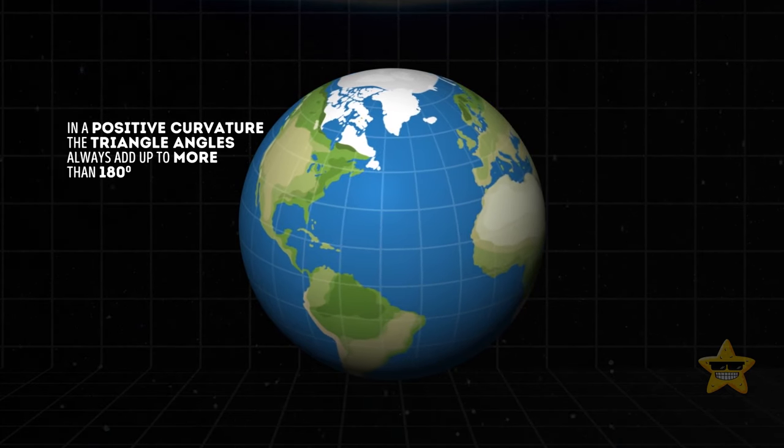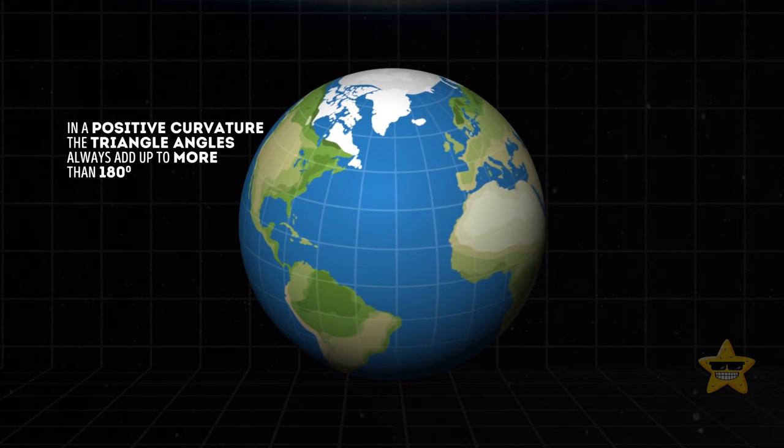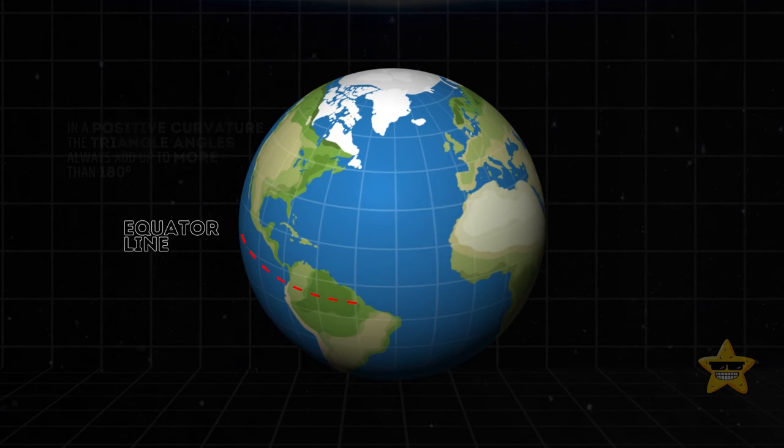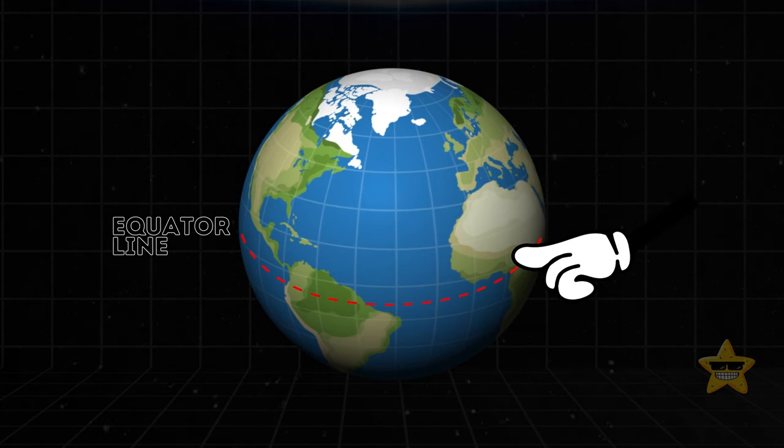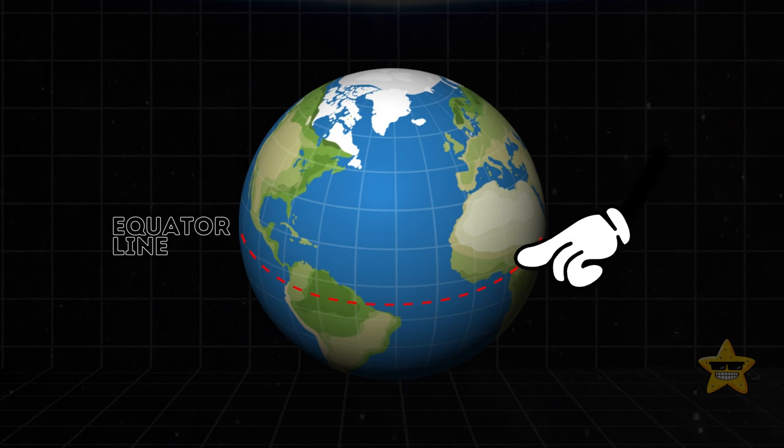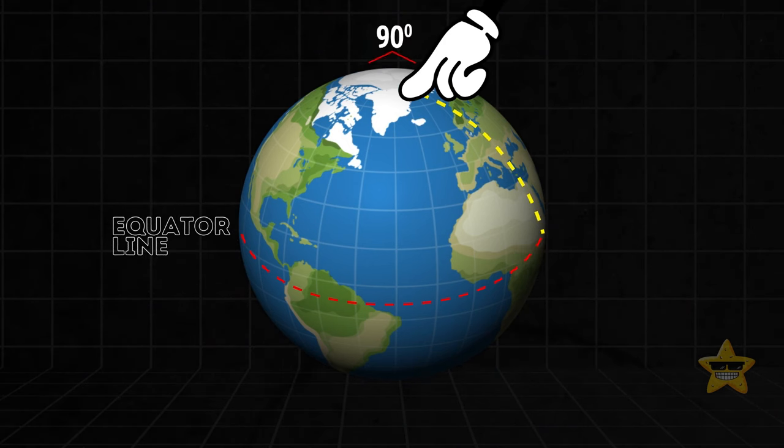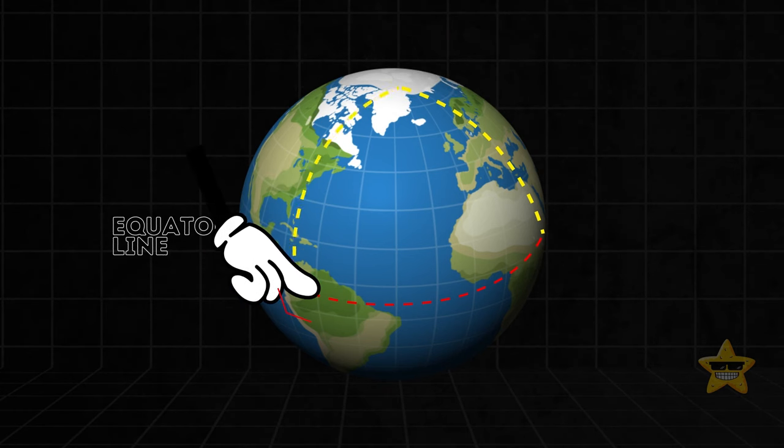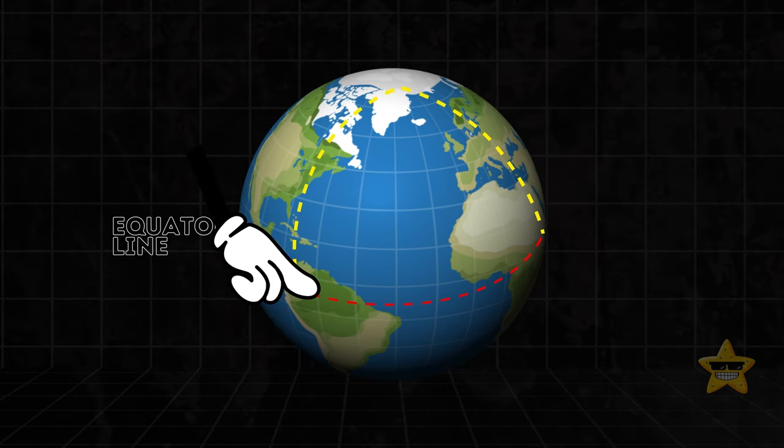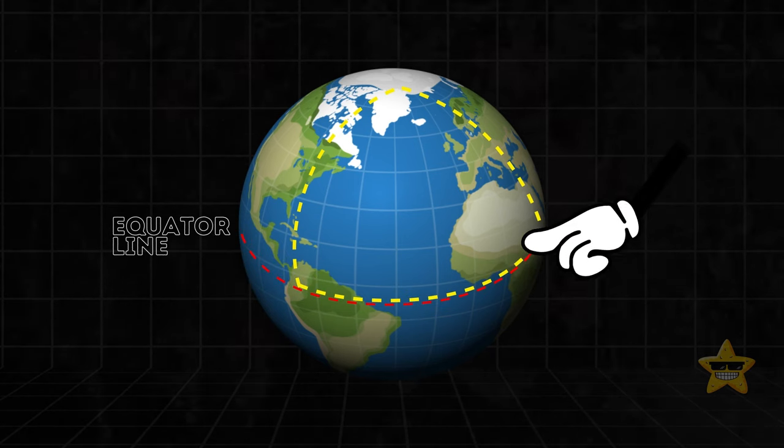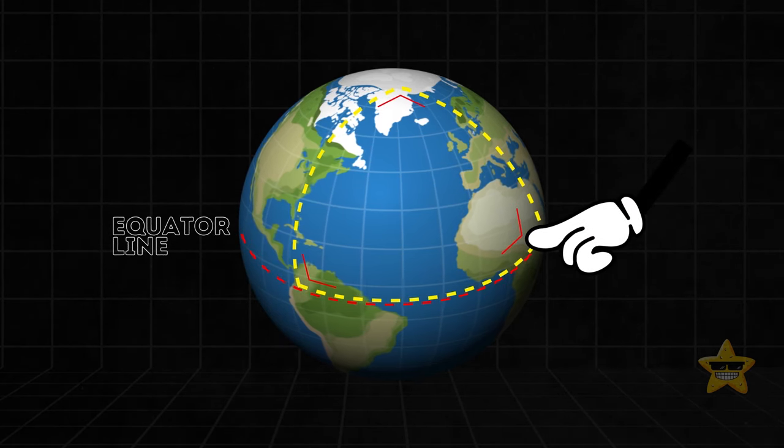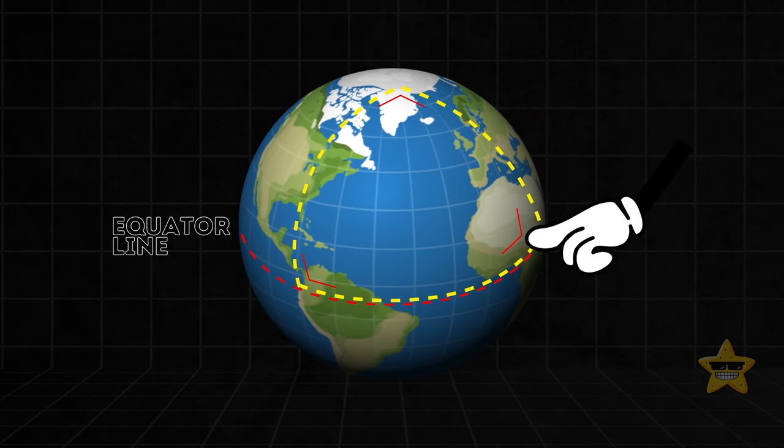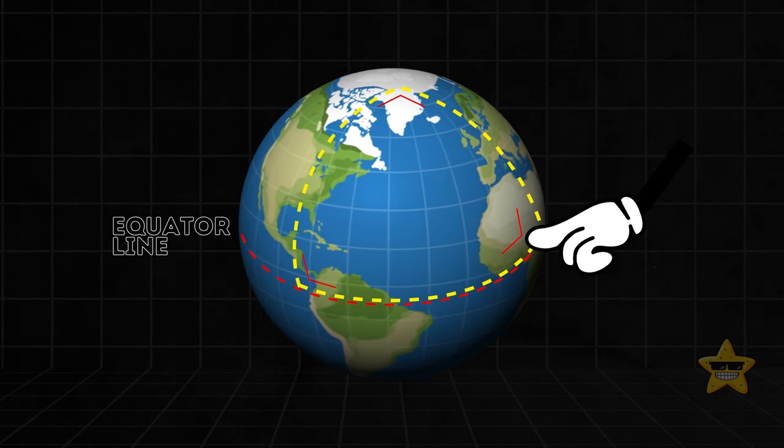If you have a terrestrial globe at home, you might find it easier to understand this next experiment. Start by placing your finger at the Earth's equator, then trace a line to the North Pole, make a 90-degree turn, and return to the equator. Make one more 90-degree turn, and walk back to your starting point. This journey only needed 3 turns, unlike the 4 turns in the flat universe scenario. Still struggling to understand? Here's another way to picture it.